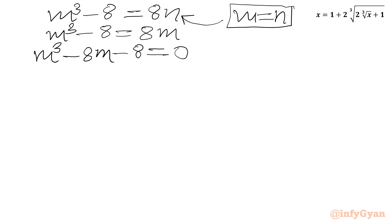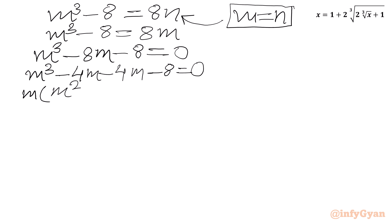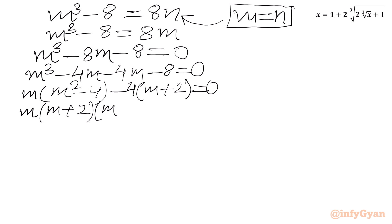Now the equation is cubic. We can use the method of factorization. We can split minus 8m as minus 4m minus 4m. So we will be writing m cubed minus 4m minus 4m minus 8 equal to zero. From the first two terms, m is common, giving m times m squared minus 4. From the last two terms, we take minus 4 common, giving minus 4 times m plus 2. We apply the difference of two squares formula: m times m plus 2 times m minus 2, minus 4 times m plus 2 equal to zero.